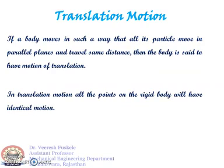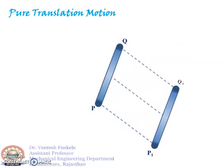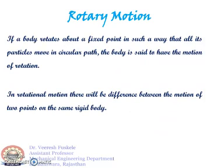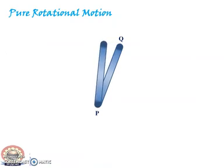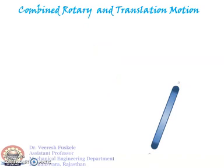Next we discussed translation motion. In translation motion, all the points on the rigid body will have identical motion. Further, we discussed pure rotational motion. In pure rotational motion, there will be a difference between the motion of two points on the same rigid body. We also saw combined rotary and translation motion, in which the body has both translatory and rotary motion.